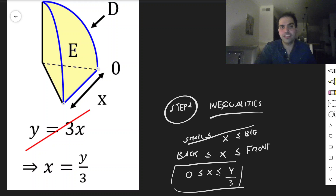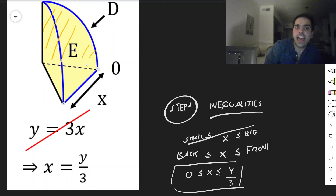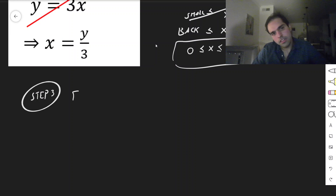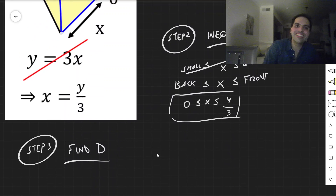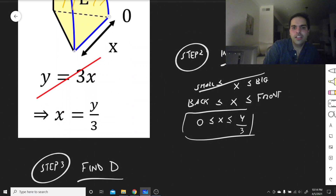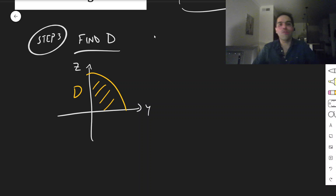The next order of business is to find the region D, which is the shadow behind the region in the x direction — step 3: find D. Notice D is just the part of the cylinder in the y-z plane, and in fact it is a quarter disk. So D is a quarter disk in y and z, and of course a circle calls for polar coordinates.